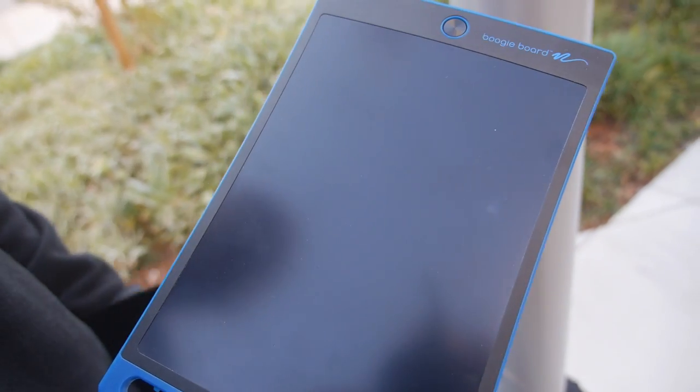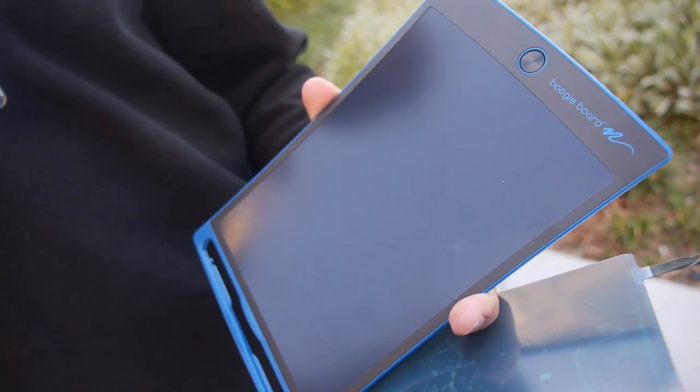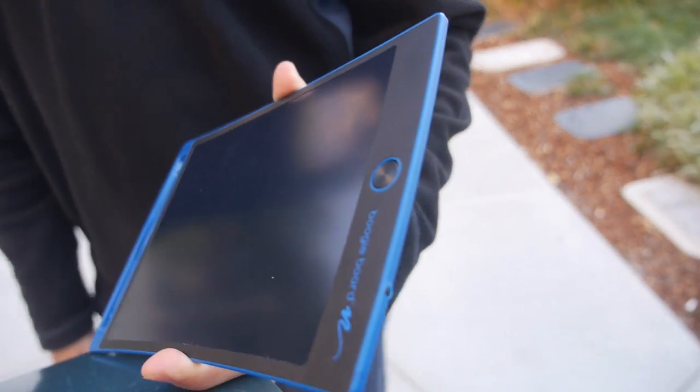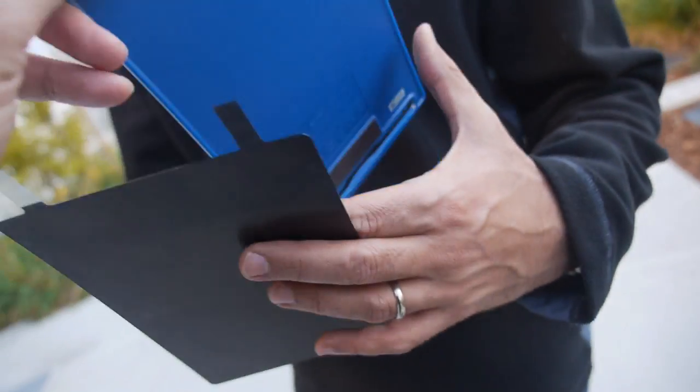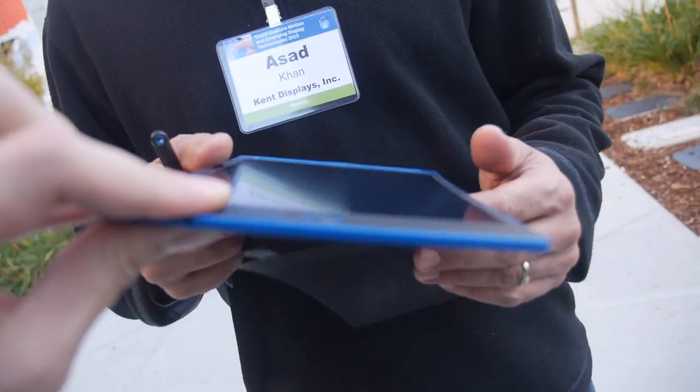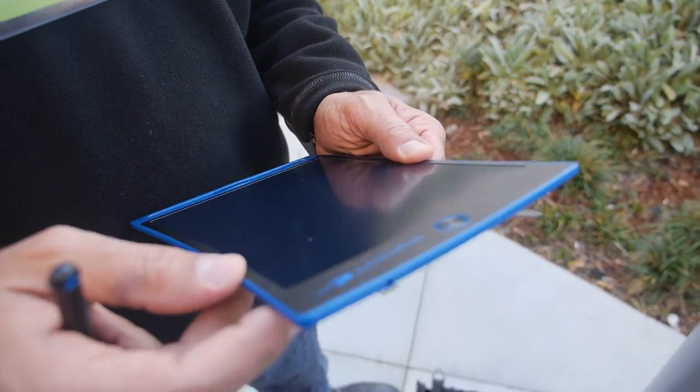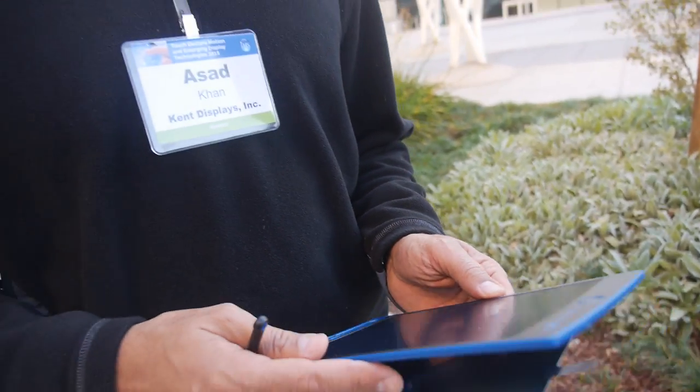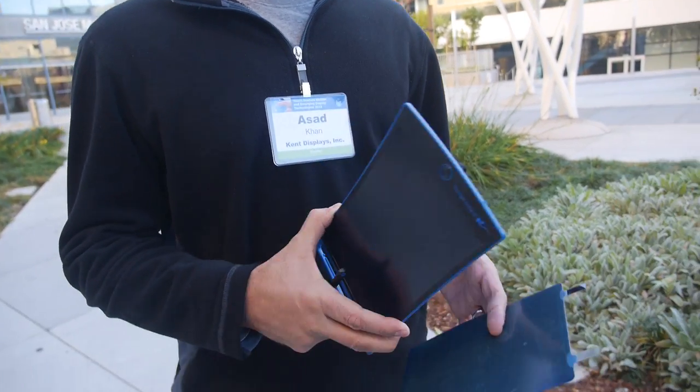Bi-stable, so very low power. Reflective, as you can see outside, it looks awesome. How long is the battery life on this one? The battery in here is a little coin cell and it's good for about seven years if you erase 20 times every day.